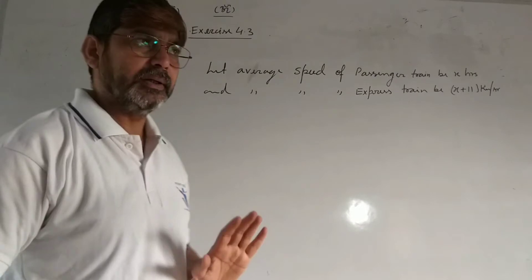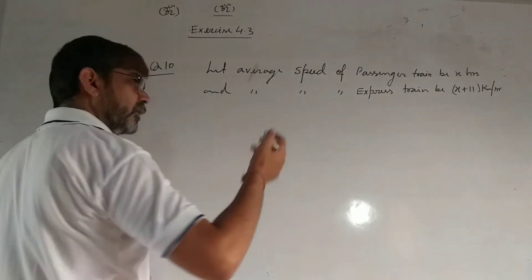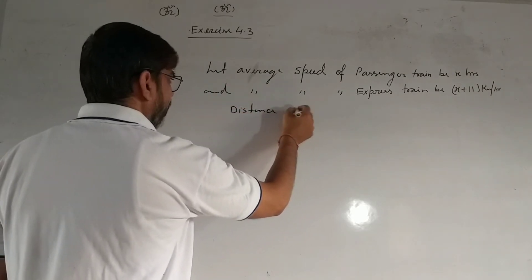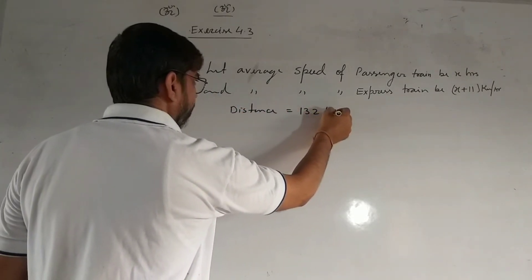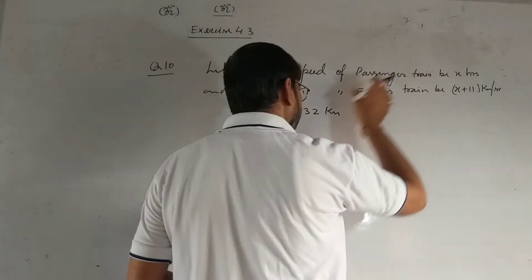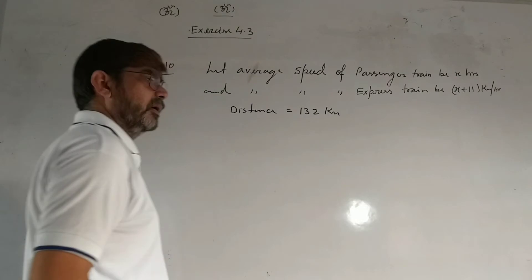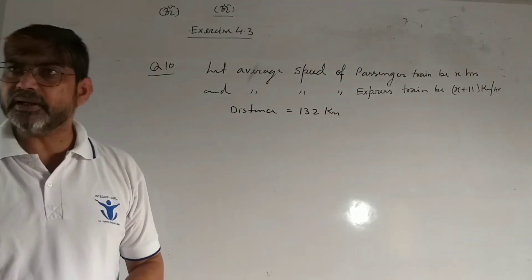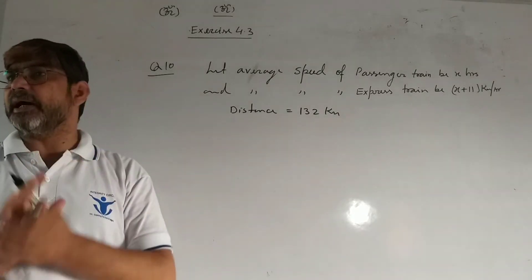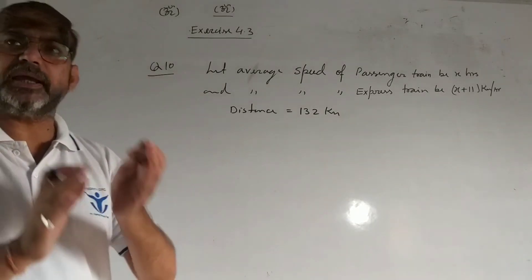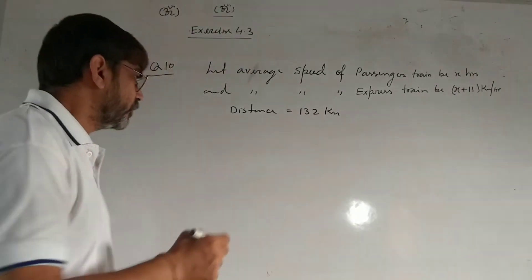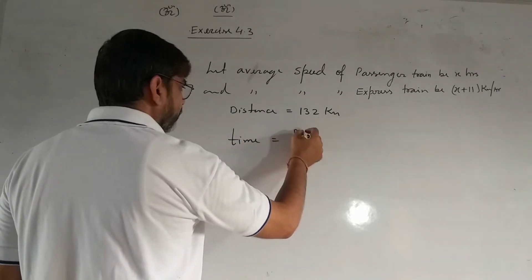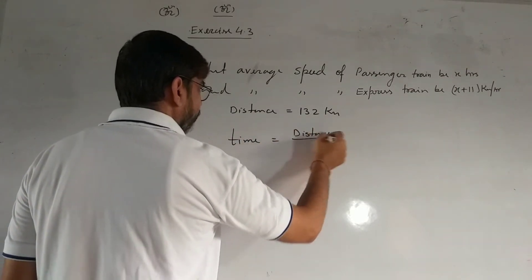दोनों की speed हमको मिल गई हैं। अब हम distance देखें कि Mysore से Bangalore के बीच में distance कितनी है? Distance है 132 km। अब इतना distance यह passenger train भी travel करेगी और इतना distance express train भी travel करेगी। हमको time निकालना है क्योंकि difference time का दिया गया है। Time का formula याद होगा - time equal to distance upon speed।